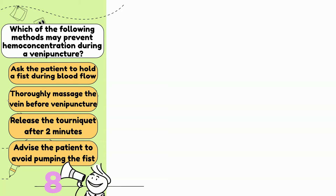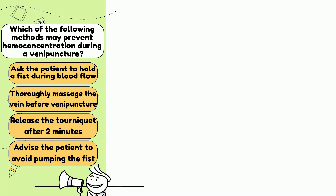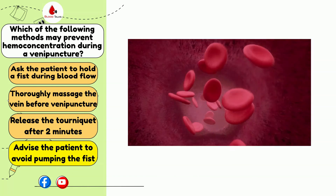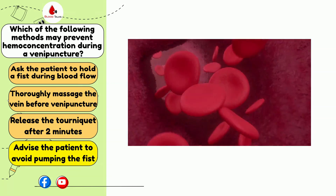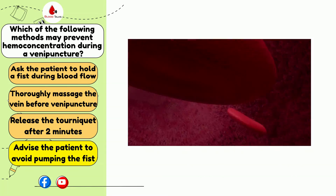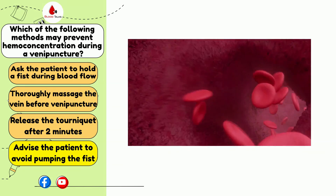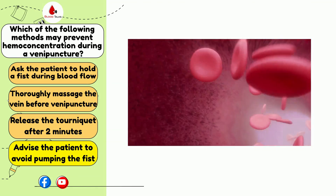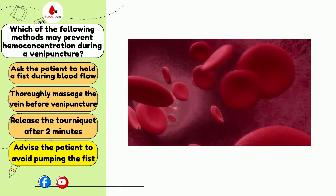Which of the following methods may prevent hemoconcentration during venipuncture? Ask the patient to hold a fist during blood draw; thoroughly massage the vein before venipuncture; release the tourniquet after 2 minutes; or advise the patient to avoid pumping the fist? The answer is D. To prevent hemoconcentration, advise the patient to avoid pumping the fist. The patient should be told to open their hand when blood begins to flow, and the tourniquet should be released within 1 minute. Massaging the vein excessively or squeezing tissues before venipuncture may cause fluid from the plasma to move into capillaries and surrounding tissues, also resulting in hemoconcentration.